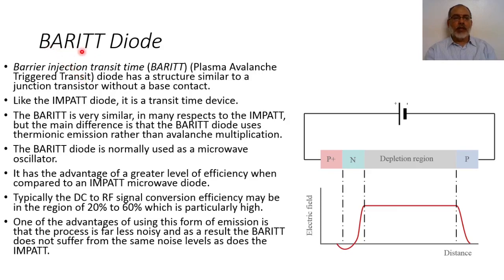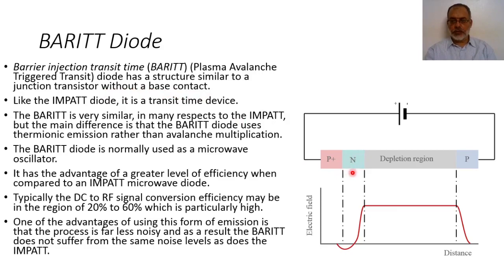The BARITT diode has a similar construction to an NPN junction transistor. The BARITT diode has a structure similar to a junction transistor without a base connection, so effectively the base is not connected — we have no terminal to the base.